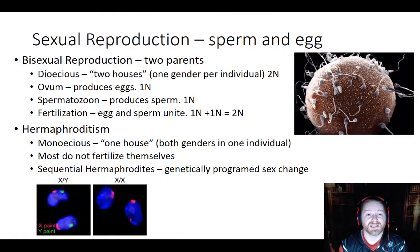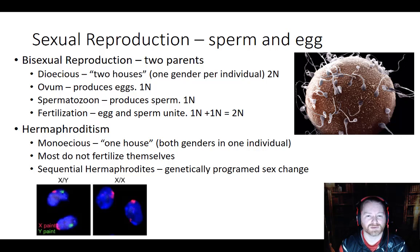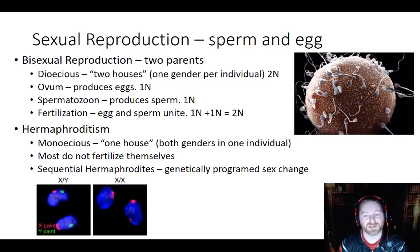So that was asexual reproduction. Now let's talk about sexual reproduction. Most people think we know a lot about sexual reproduction because our species reproduces through it, but we only use one variation of sexual reproduction. We use what's called bisexual reproduction.